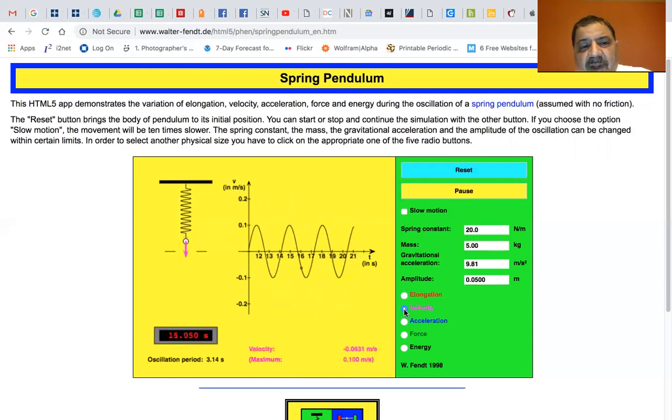You can look at the velocity. The velocity is maximum as it goes through the zero crossing and is zero at either end.